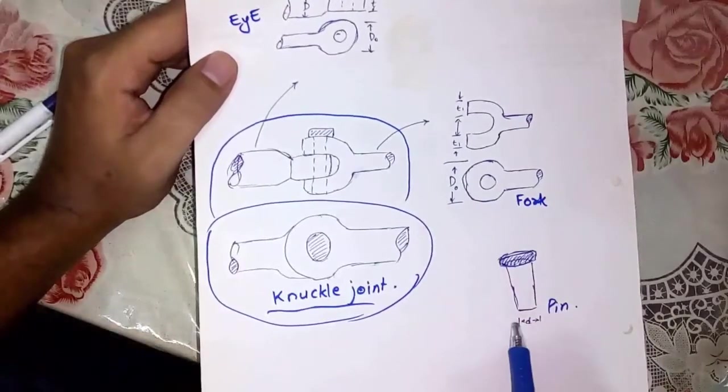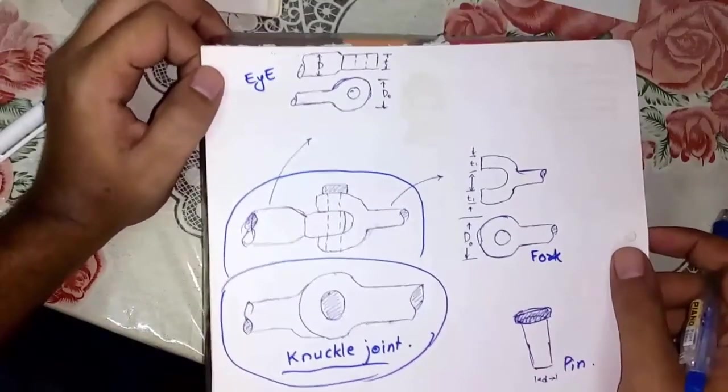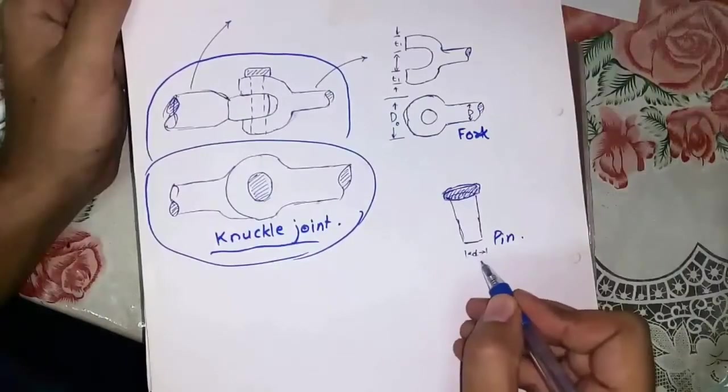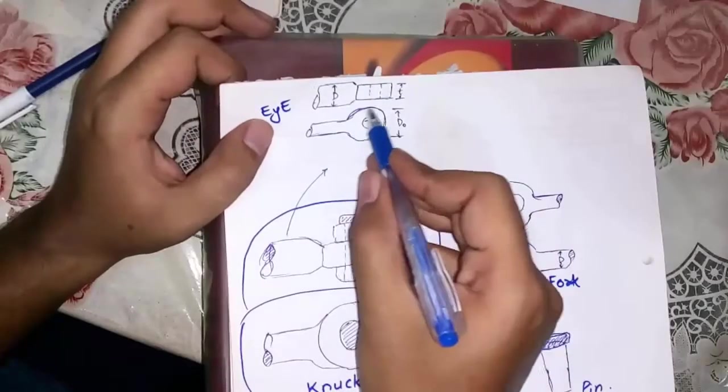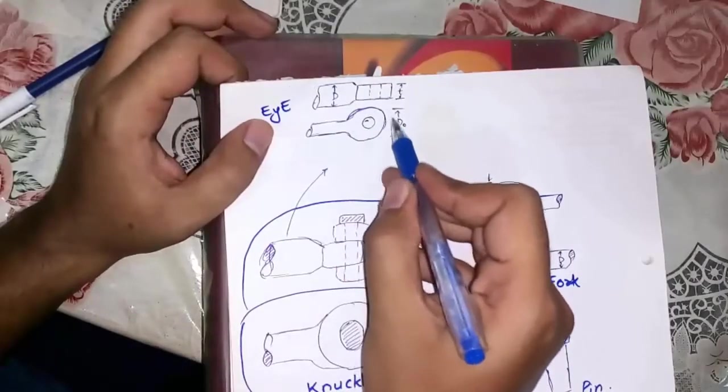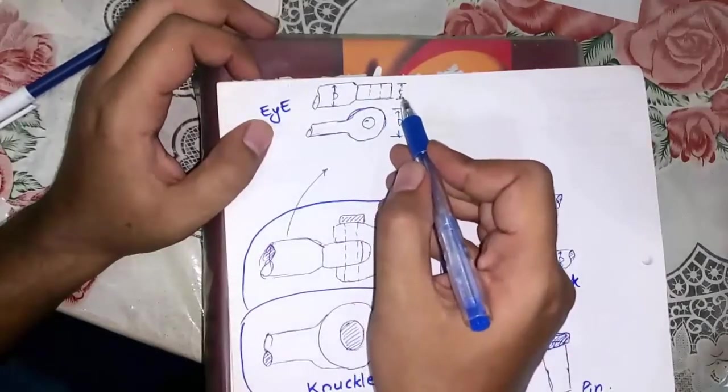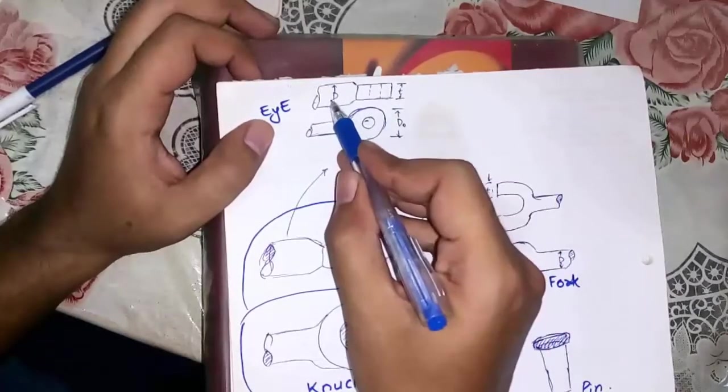Let's move toward the representation of the different dimensions. Pin has the diameter small d. d0 is the diameter of this circle. Thickness of the eye circle is t. d is the diameter of end rod.